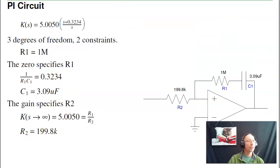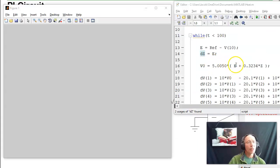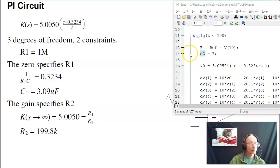In terms of software, all I do is modify one line of code. I have K of S is 5 times S plus 0.32 over S. That's P is equal to 5. The I is 5 times 0.32, so it's 5.05 times the error plus 0.32 times Z. Z is the integral of the error.